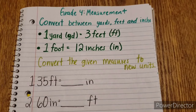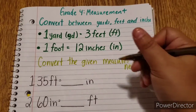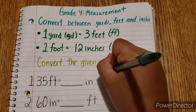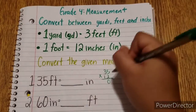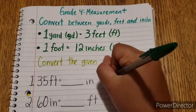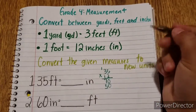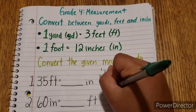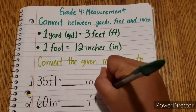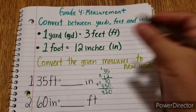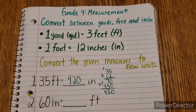Here we have 35 feet — how many inches are there in 35 feet? Since 1 foot equals 12 inches, we do 35 times 12. 5 times 2 is 10; 3 times 2 is 6, plus 1 is 7. Then 5 times 1 is 5, and 3 times 1 is 3. Adding: 0, then 7 plus 5 is 12, then 3 plus 1 is 4. So that is 420 inches.